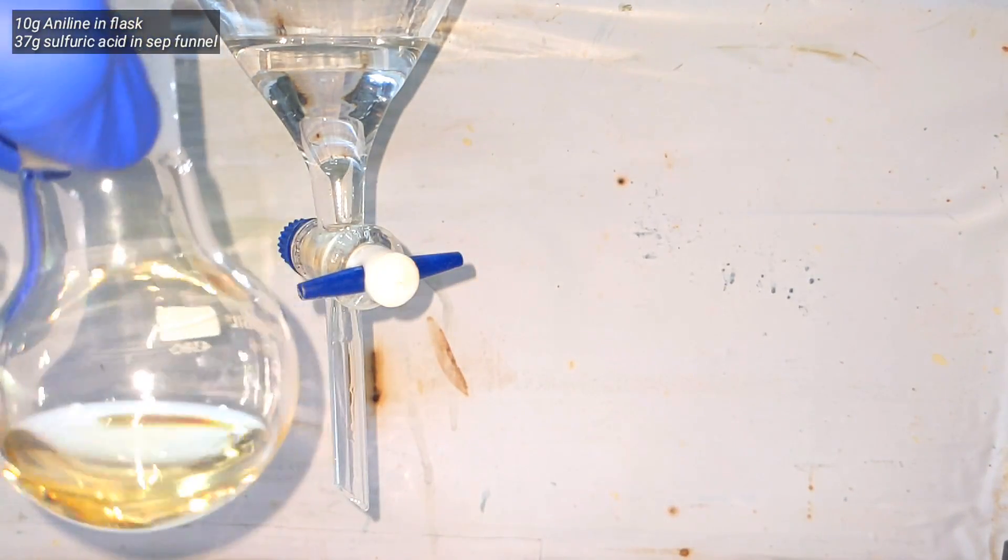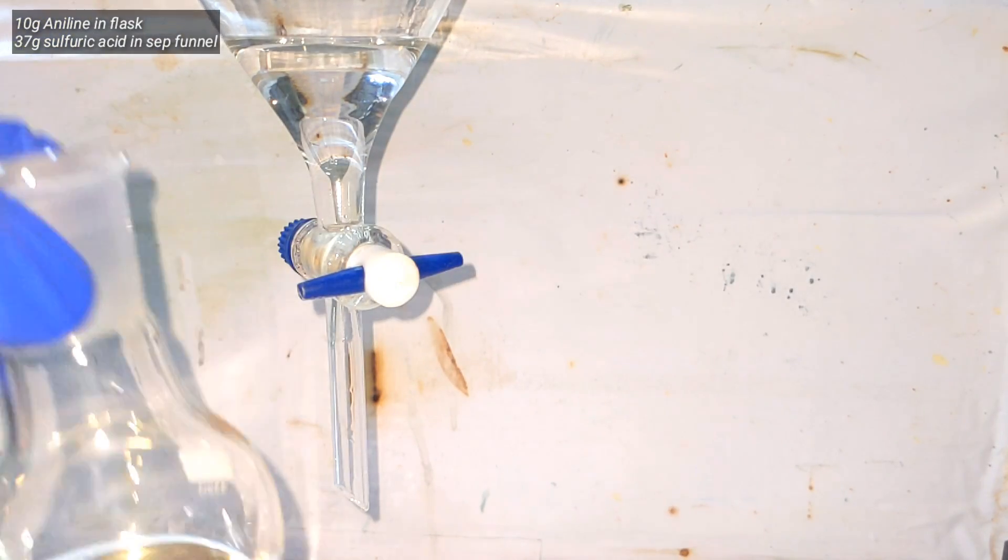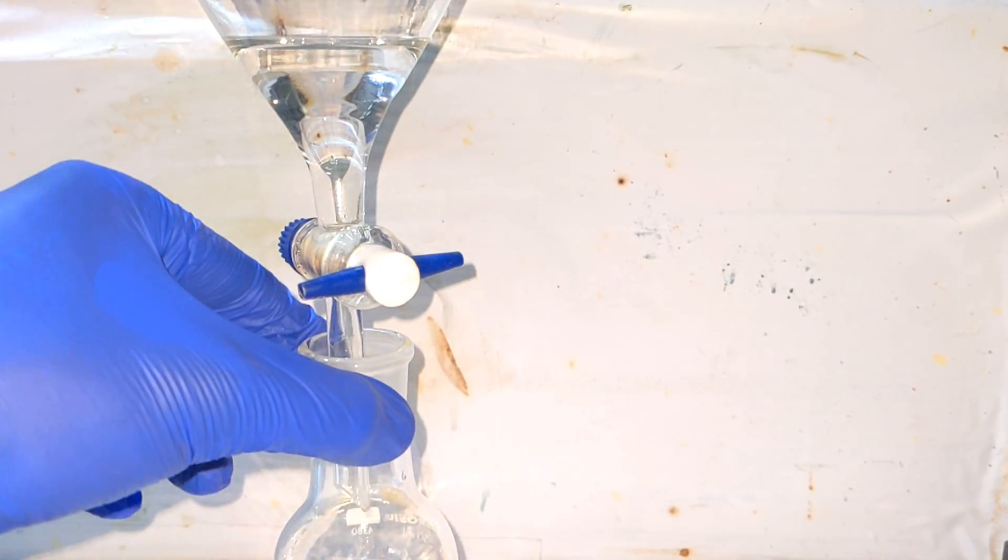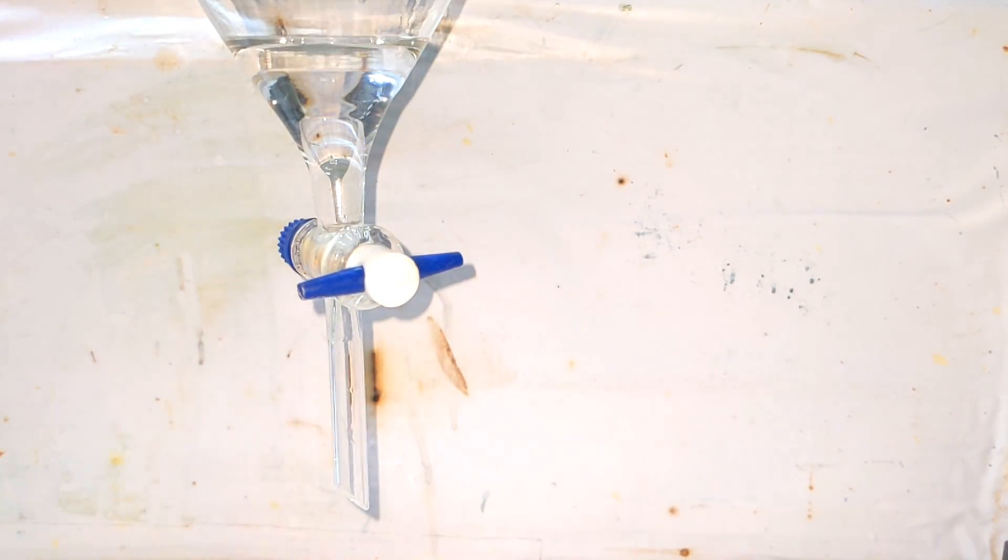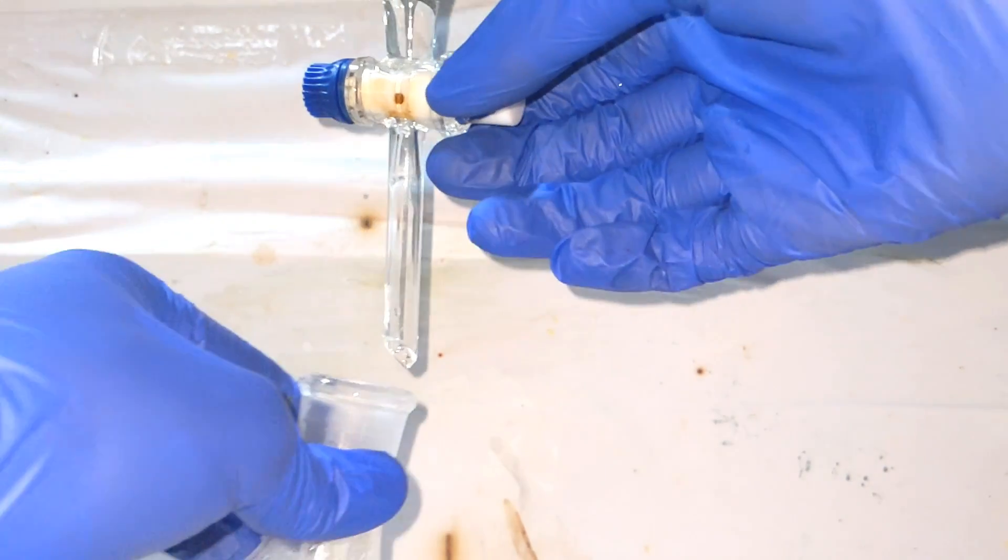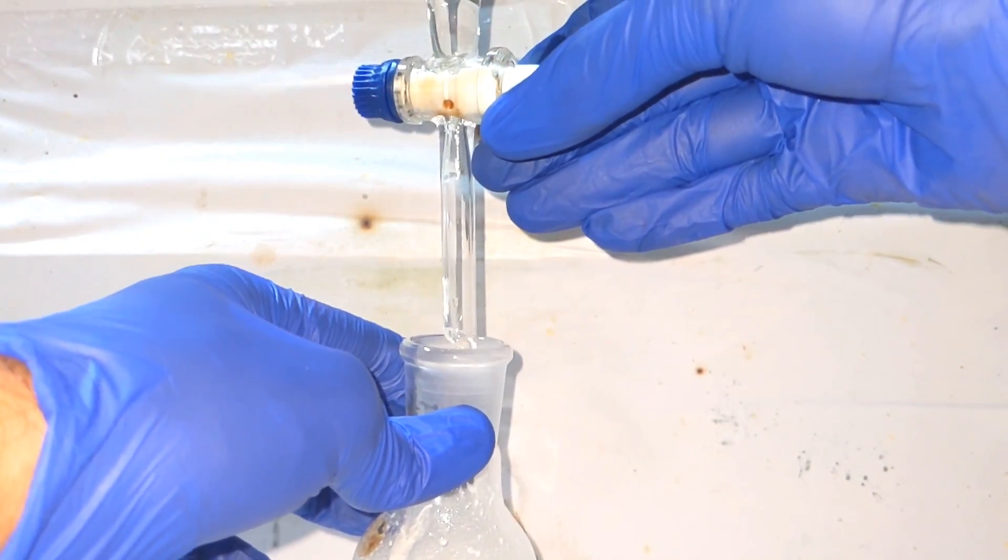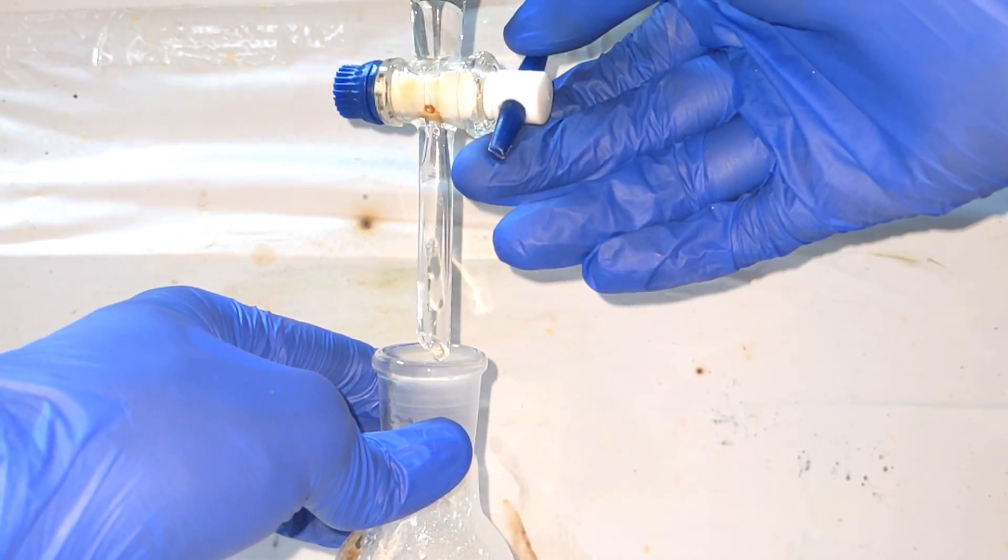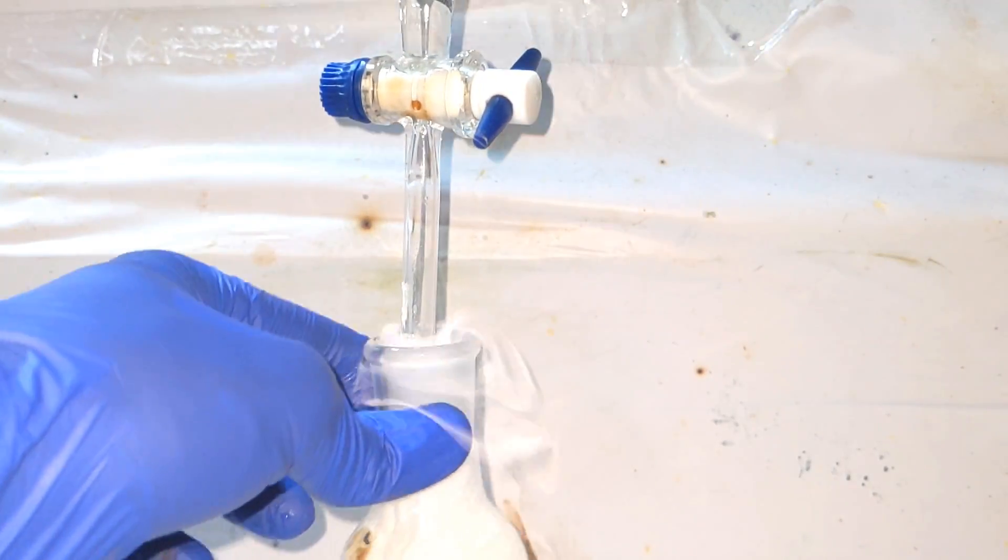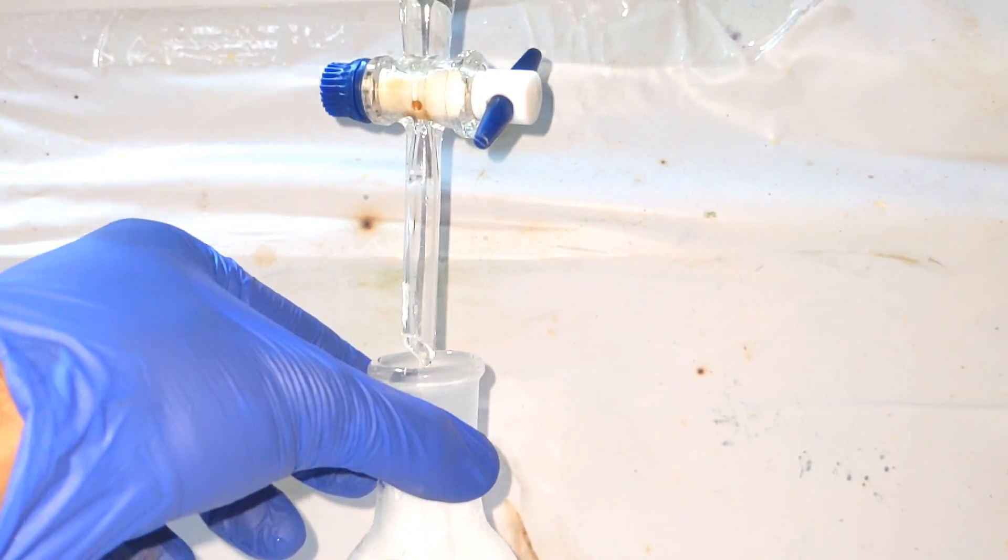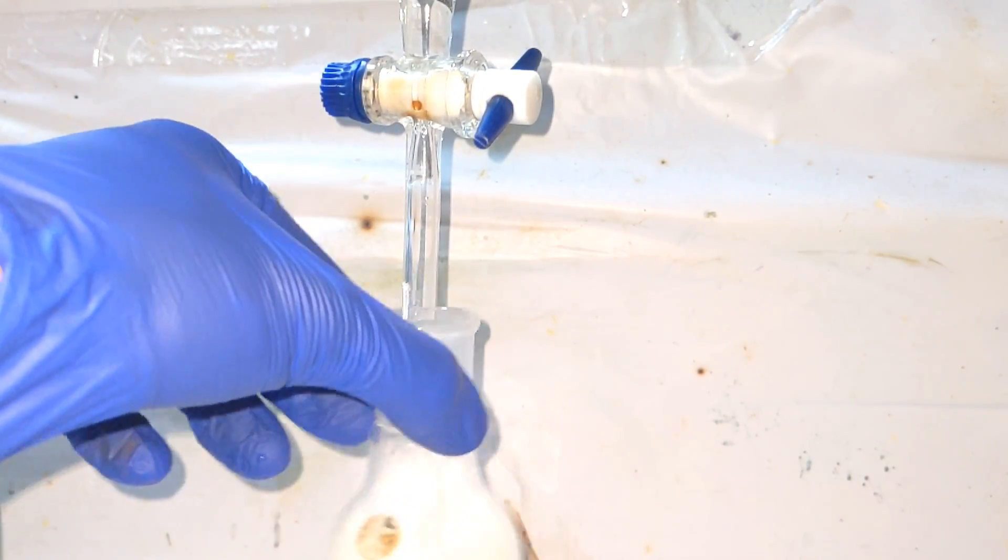Start by taking 10.2 grams of freshly distilled aniline in a round bottom flask and 37 grams of 98% sulfuric acid in a separatory funnel. Adjust the knob so that sulfuric acid falls very slowly into the aniline. This can generate a lot of heat, so cooling the flask is very important.